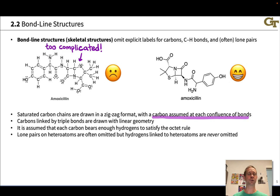So we've developed a shorthand to hide a lot of that visual complexity without sacrificing important aspects of the structure that are relevant to its properties and reactivity, the properties and reactivity of the compound. These are known as bond line structures.